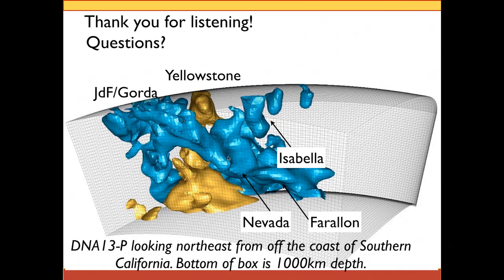You can add questions in the question box or down in the YouTube comments. I'll leave you with this 3D picture showing the blues hanging out in the upper mantle — the bottom of this box is at 1,000 km — with a deep source coming up through the upper mantle and a big hole in the Gorda and Juan de Fuca plates. Thanks.